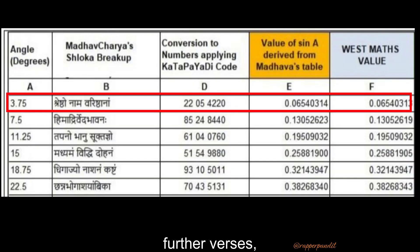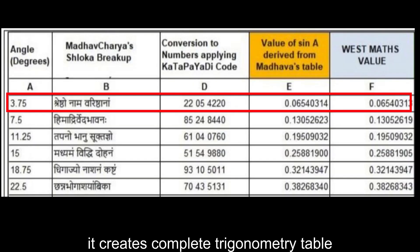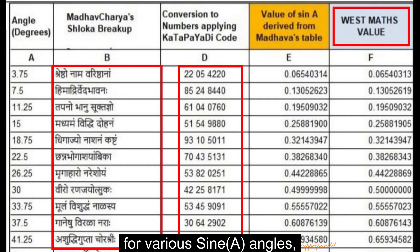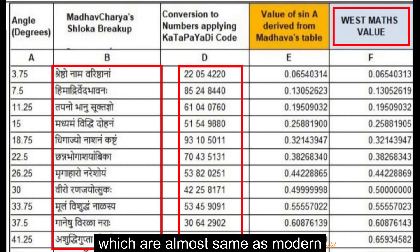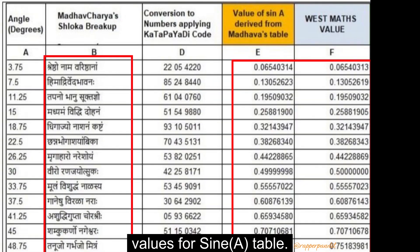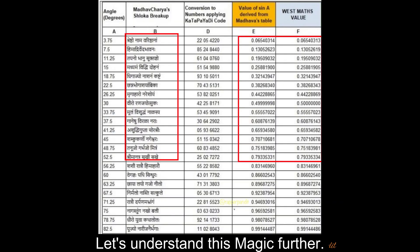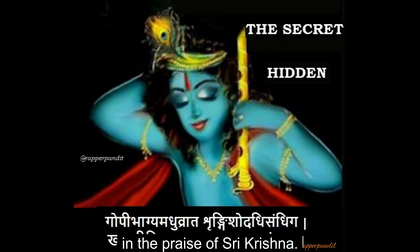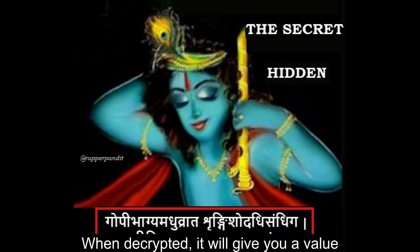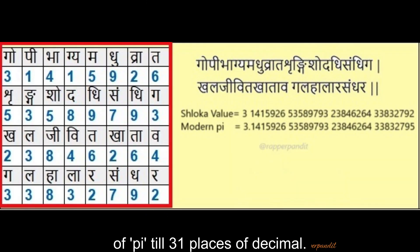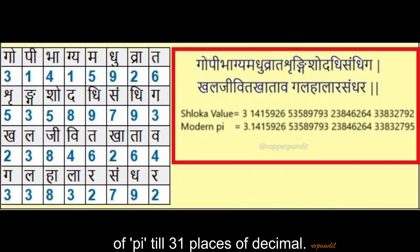When we decrypt further verses, it creates a complete trigonometry table for various sine angles which are almost the same as modern values for the sine table. Now look at this shloka in the praise of Shri Krishna — but look carefully. When decrypted, it will give you a value of pi to 31 decimal places.